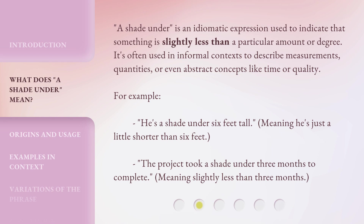'A shade under' is an idiomatic expression used to indicate that something is slightly less than a particular amount or degree. It's often used in informal contexts to describe measurements, quantities, or even abstract concepts like time or quality. For example: 'He's a shade under 6 feet tall,' meaning he's just a little shorter than 6 feet. 'The project took a shade under 3 months to complete,' meaning slightly less than 3 months.